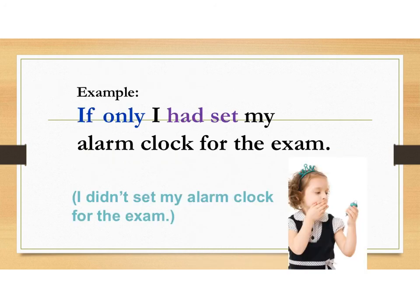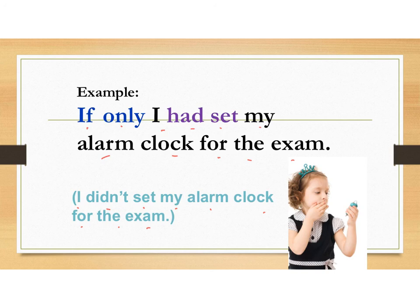Example two: If only I had set my alarm clock for the exam. So it means I didn't set my alarm clock for the exam. 如果那時我有設到鬧鐘，準備考試就好了，亦都代表了你是沒有設到鬧鐘的。